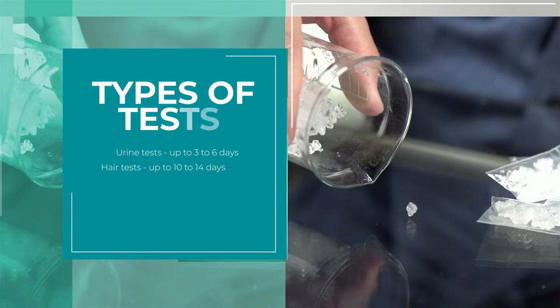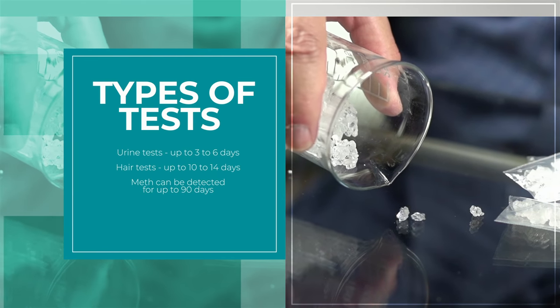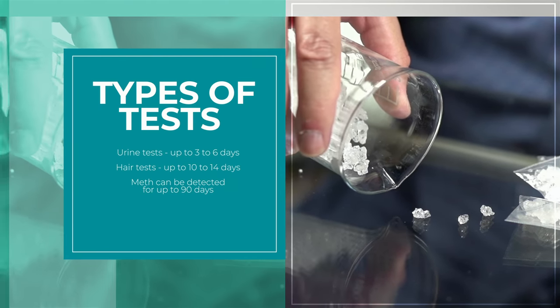When testing someone's blood for meth, it can be detected immediately after use and for up to 24 to 72 hours after.